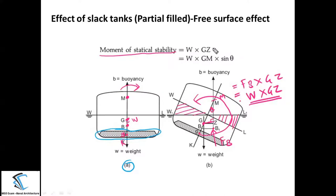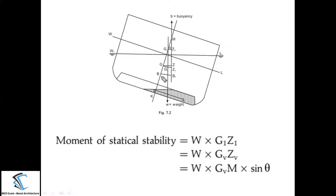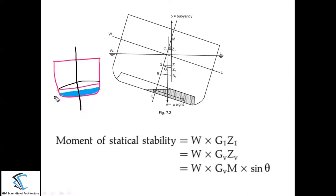For small angles, we can write GZ = GM × sin(theta), which we discussed in earlier classes. So when the liquid is present in the tank and it is completely filled, it works as a normal condition. But if the double bottom is partially filled, there will be some space available in the double bottom for the movement of the liquid present inside.